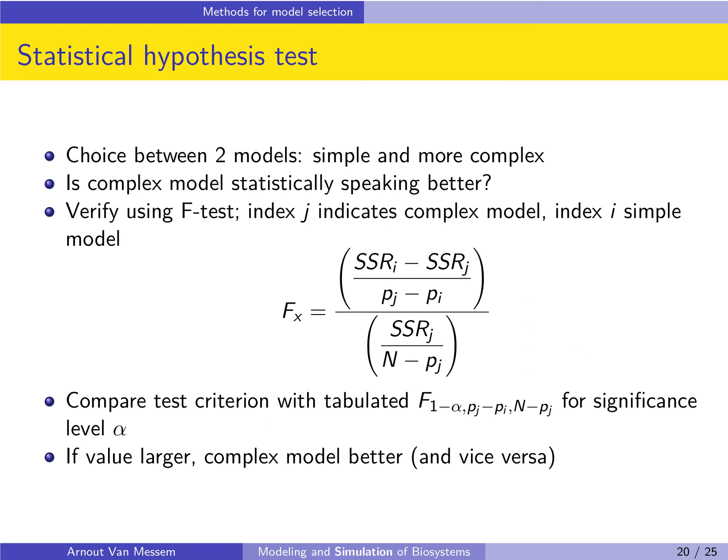We can also perform a statistical hypothesis test to choose between two models — comparing a simple and a more complex model using an F-test. The question is whether the complex model is statistically better, i.e., whether the decrease in error for the complex model is large enough to justify its added complexity. The F-statistic is defined as: the difference in sum of squared residuals between the simple model (index I) and complex model (index J), divided by the difference in number of parameters, all divided by SSR_J over N minus P_J.